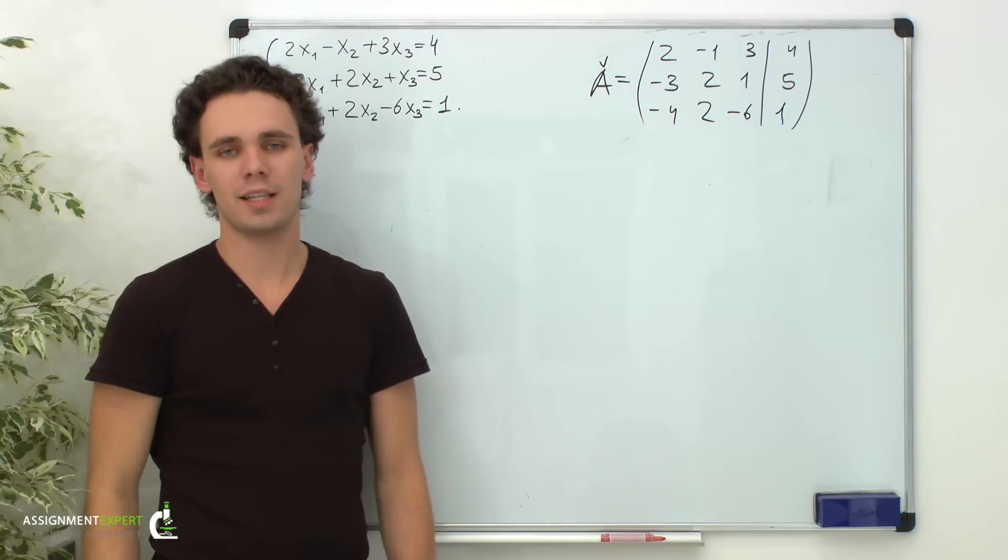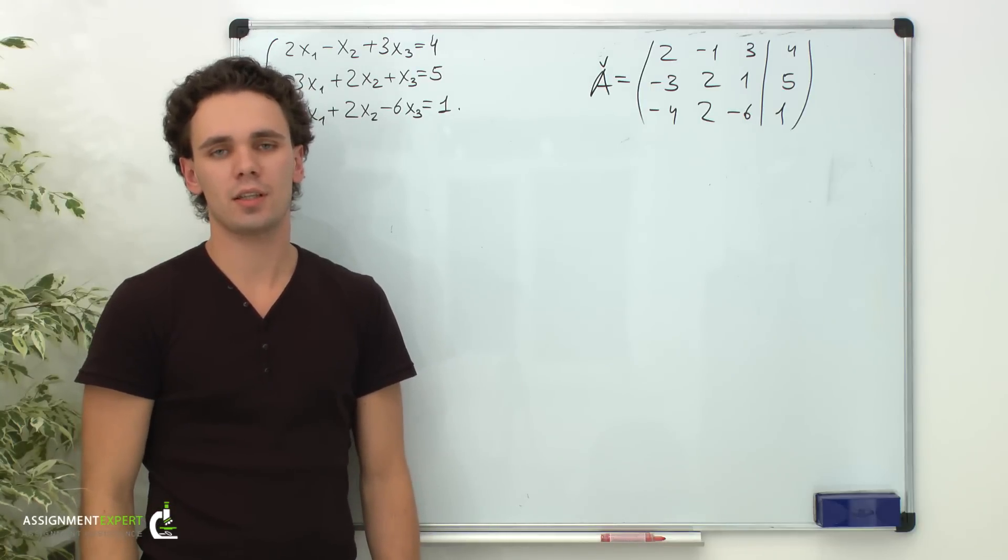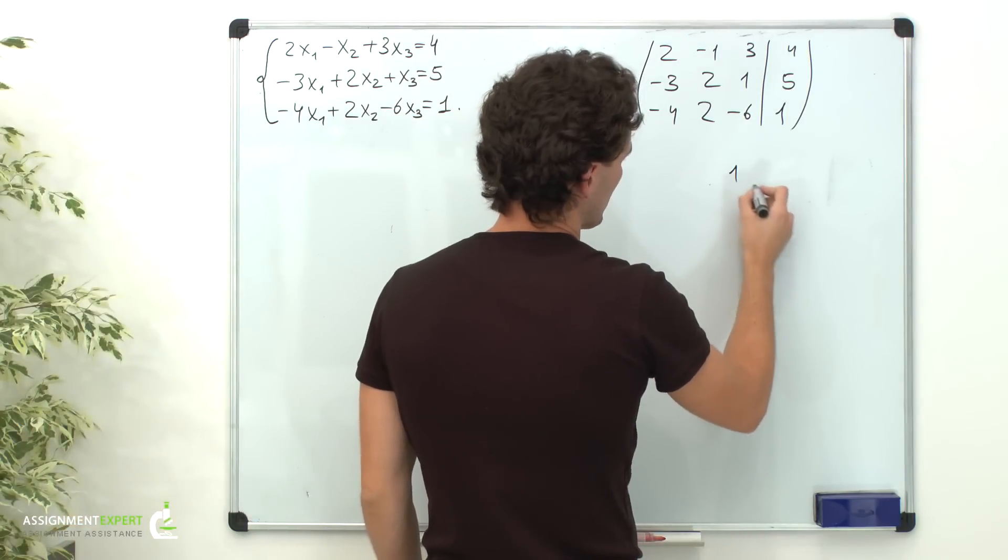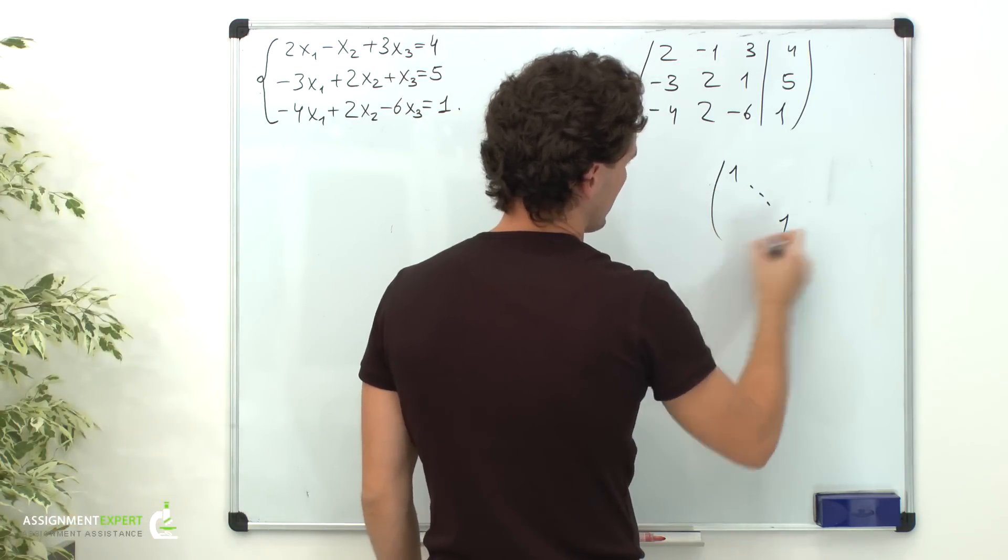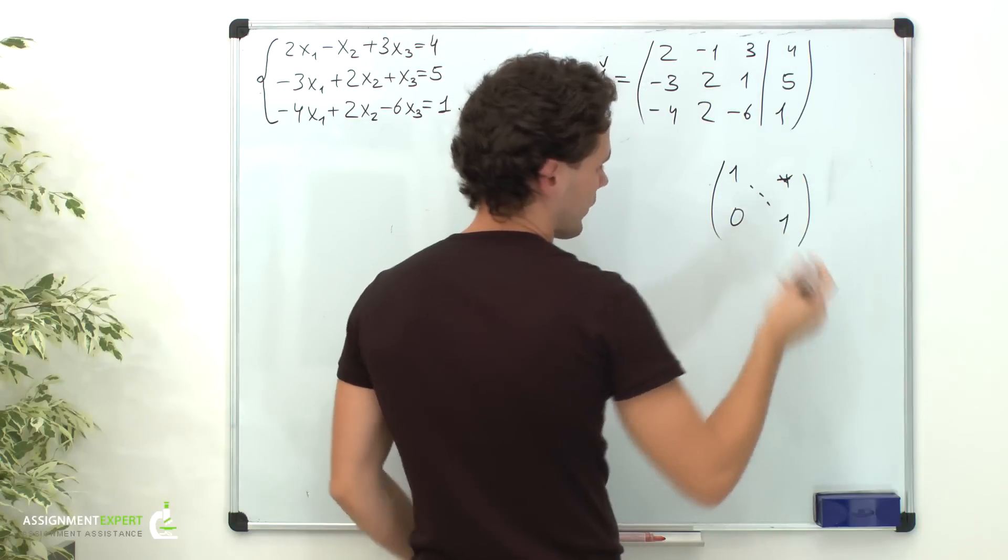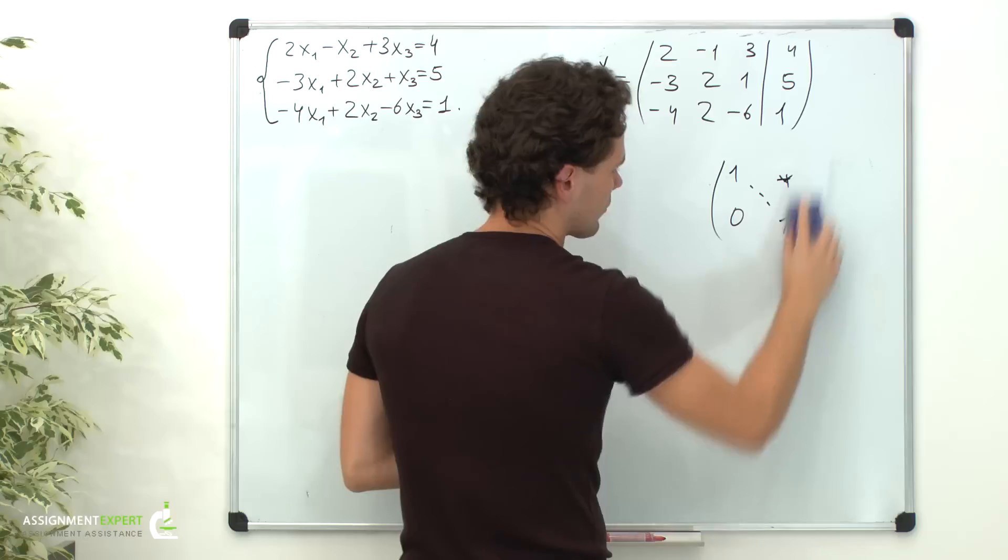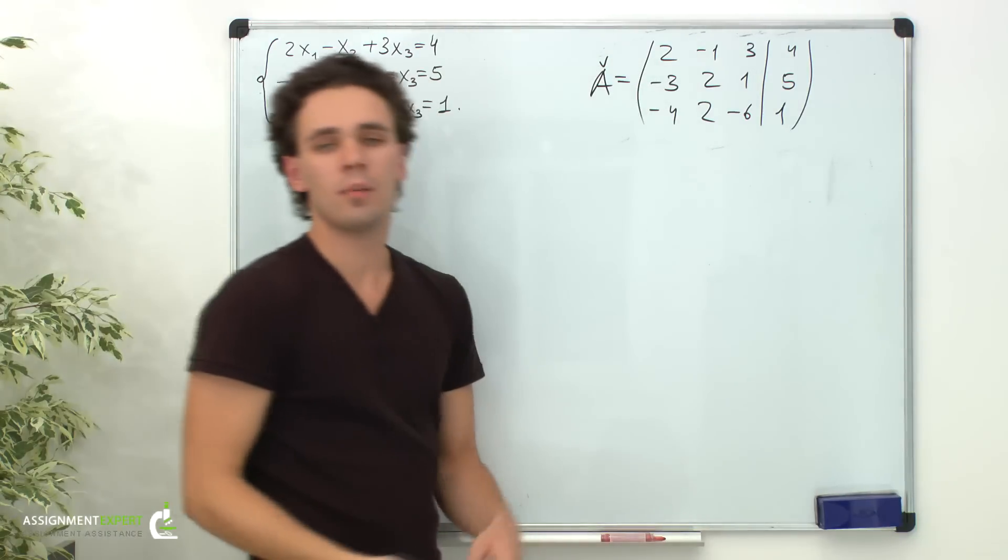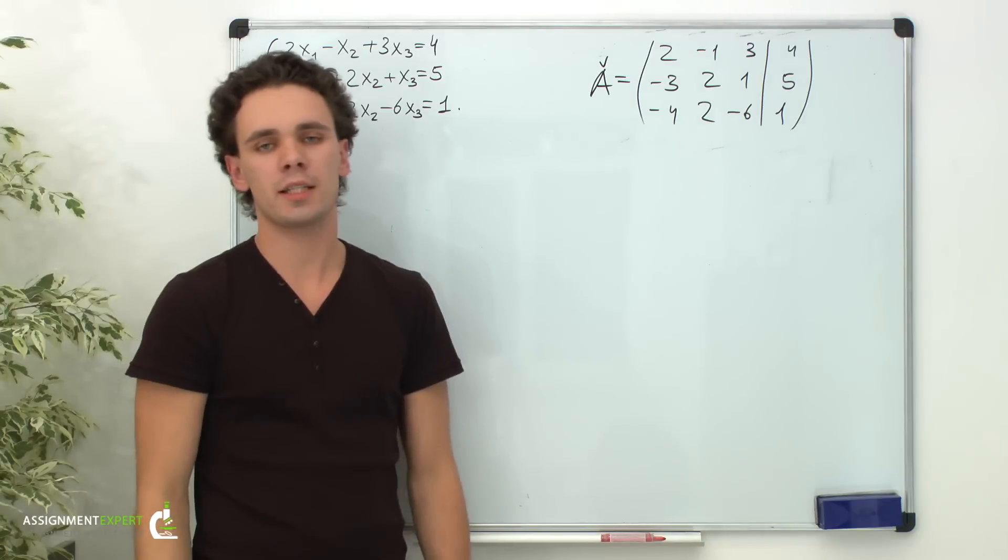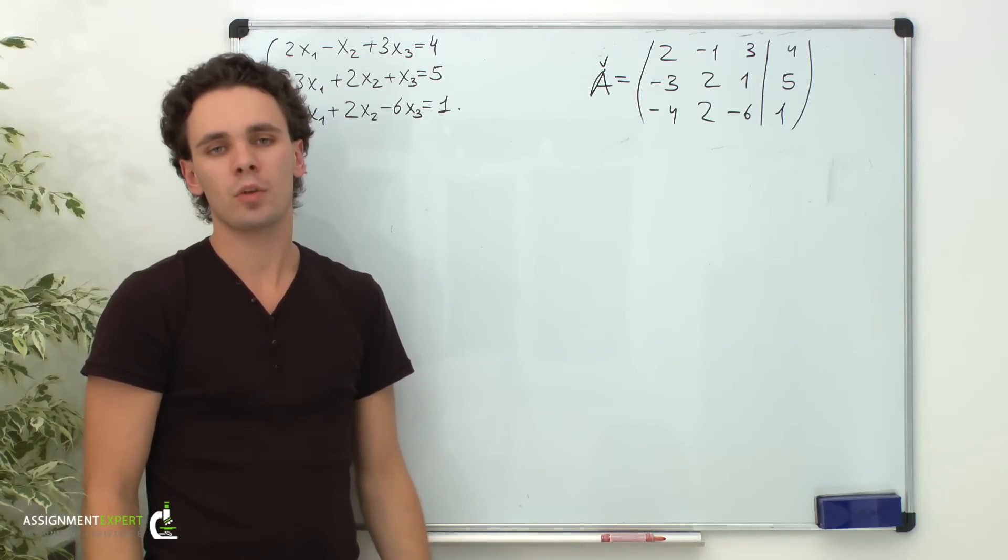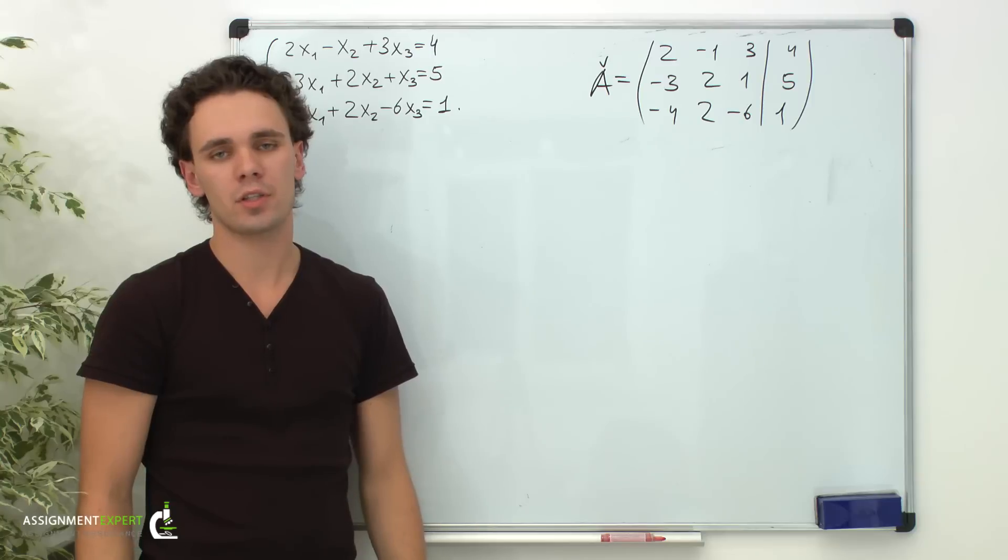Now we intend to represent this matrix in the triangular form, which means we must have 1s on the main diagonal, 0s below it and some values above it. Before we start, recall that we can swap rows, add or subtract them, multiply or divide them by real non-zero numbers.